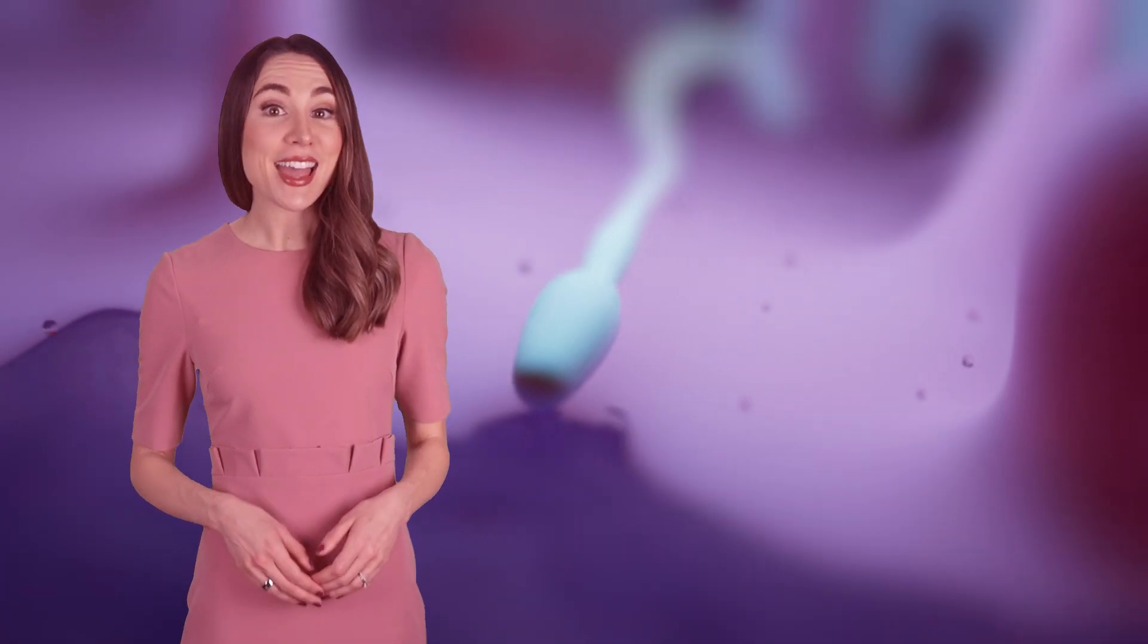Within the zona pellucida, there exists a small fluid-filled space just outside the egg's membrane, and it is the first sperm to make contact with this space that fertilizes the egg. Against all odds, a solitary sperm successfully attaches itself to the egg's membrane.